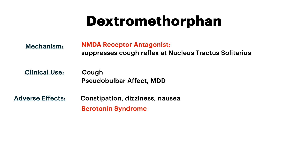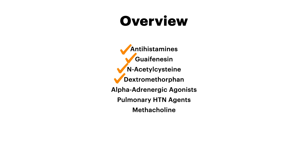Now let's talk about dextromethorphan. The mechanism is that it's an NMDA receptor antagonist, and this suppresses the cough reflex specifically at the nucleus tractus solitarius. I would know the mechanism and know that structure of the brain. Clinically, dextromethorphan is used in cough, and it also has some non-respiratory uses: pseudobulbar affect and major depressive disorder. Adverse effects include constipation, dizziness, and nausea. The test writers love to test serotonin syndrome — dextromethorphan has some serotonergic activity, so they love to give you a patient who took dextromethorphan for a cough and develops symptoms consistent with serotonin syndrome, especially in combination with other serotonergic medications. Know the mechanism and know that it can cause serotonin syndrome.